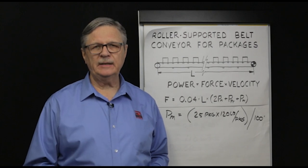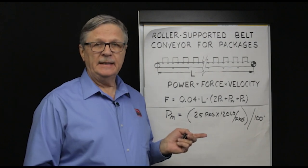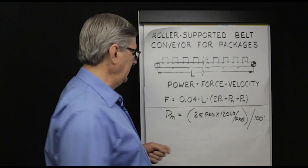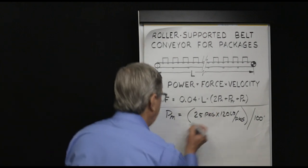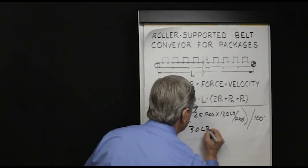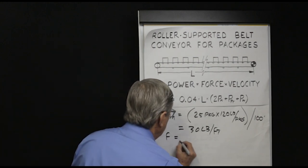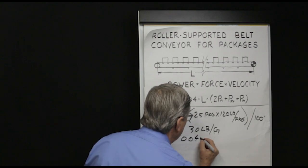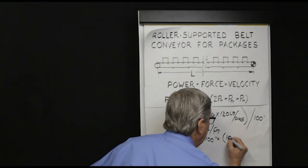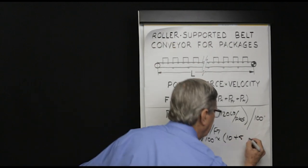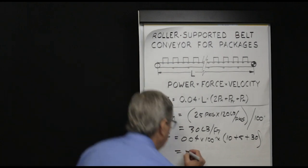Previously PM was calculated for 50-pound boxes. Now let's calculate PM for 120-pound boxes. With 25 packages on the conveyor, each weighing 120 pounds, over 100 feet of conveyor, PM equals 30 pounds per foot of product. Using the same equation — 0.04 for bearing resistance, 100 feet for conveyor length, 10 pounds per foot of belting, 5 pounds per foot of rolling stock, and 30 pounds per foot of product — the total belt pull requirement is 180 pounds.